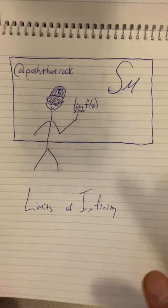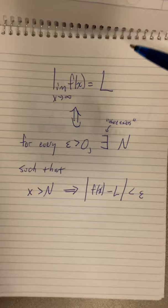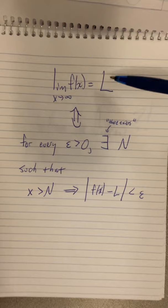Push That Rock here with Simpson Math discussing limits and infinity. Here's the definition due to Bolzano-Weierstrass. The definition says the limit of the function f as x goes to infinity equals the number L